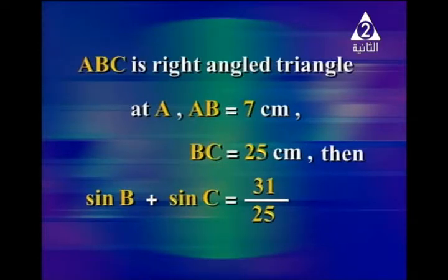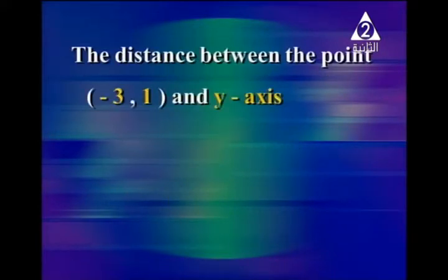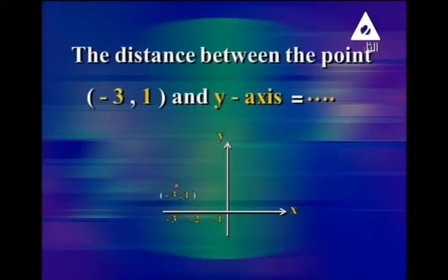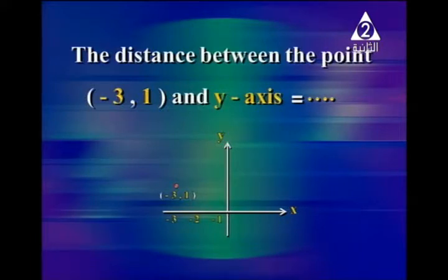Another example: the distance between the point negative 3 and 1 and the y-axis equals how many units. Plot the point negative 3 and 1. The distance means the perpendicular distance. The perpendicular distance between this point and the y-axis is 3 units.